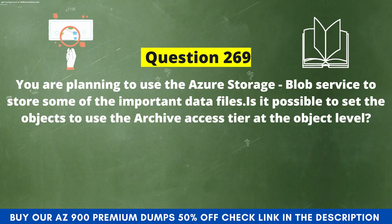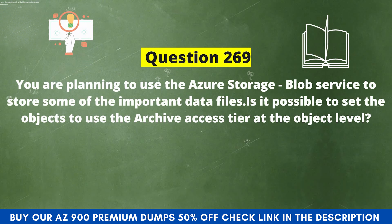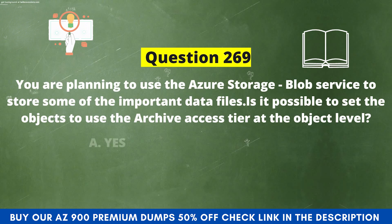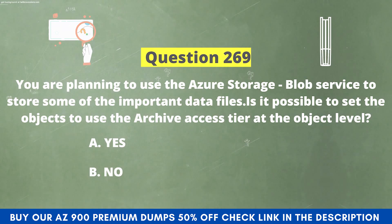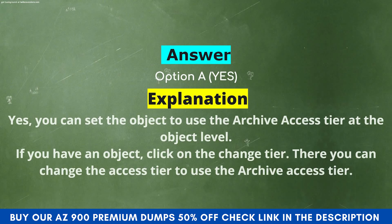You are planning to use the Azure Storage blob service to store some important data files. Is it possible to set the objects to use the archive access tier at the object level? Option A, Yes. Option B, No. And the correct answer is Option A, Yes. You can set the object to use the archive access tier at the object level. If you have an object, click on change tier, and there you can change the access tier to use the archive access tier.